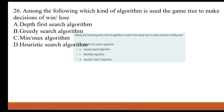Among the following, which kind of algorithm is used in a game tree to make decisions of win or loss? A. Depth-first search. B. Greedy search algorithm. C. Minimax algorithm. D. Heuristic search algorithm.